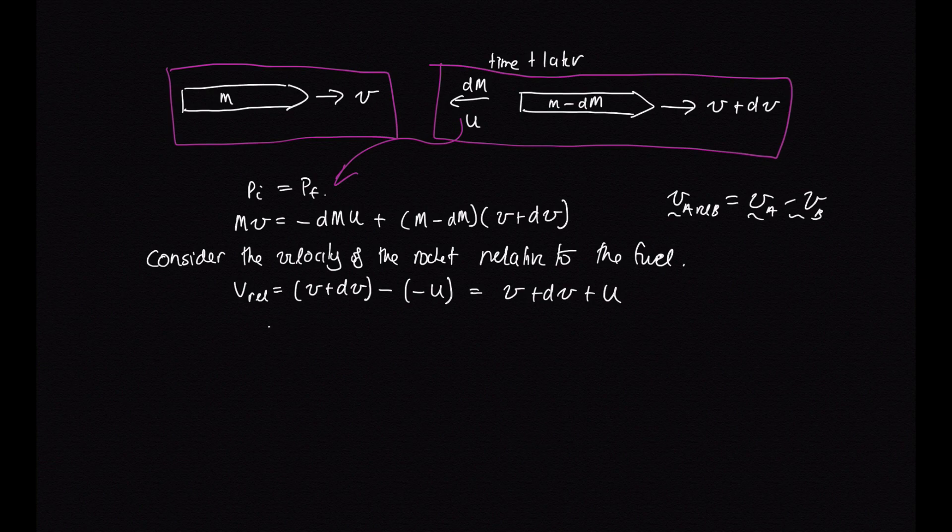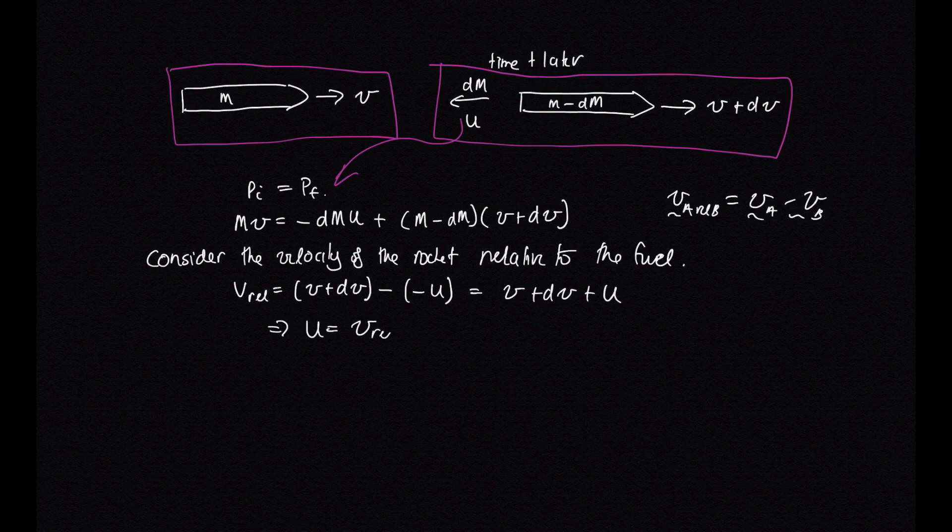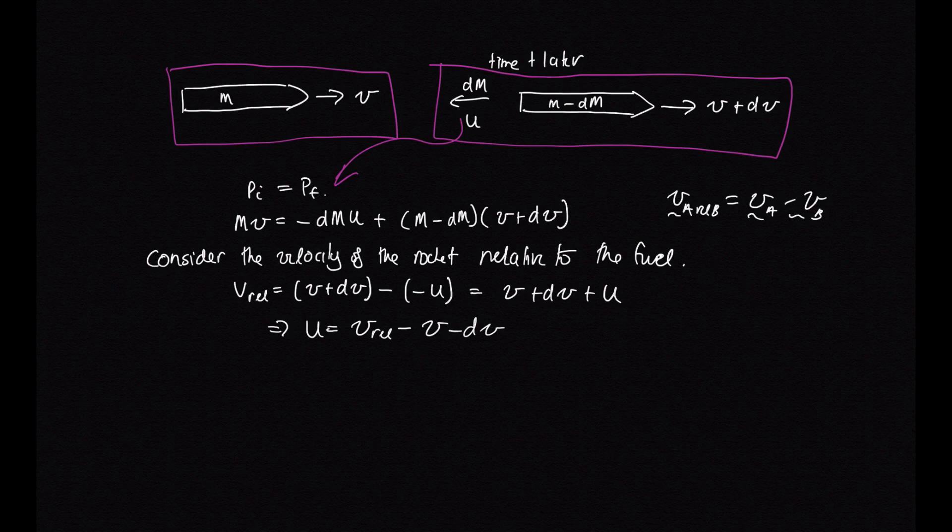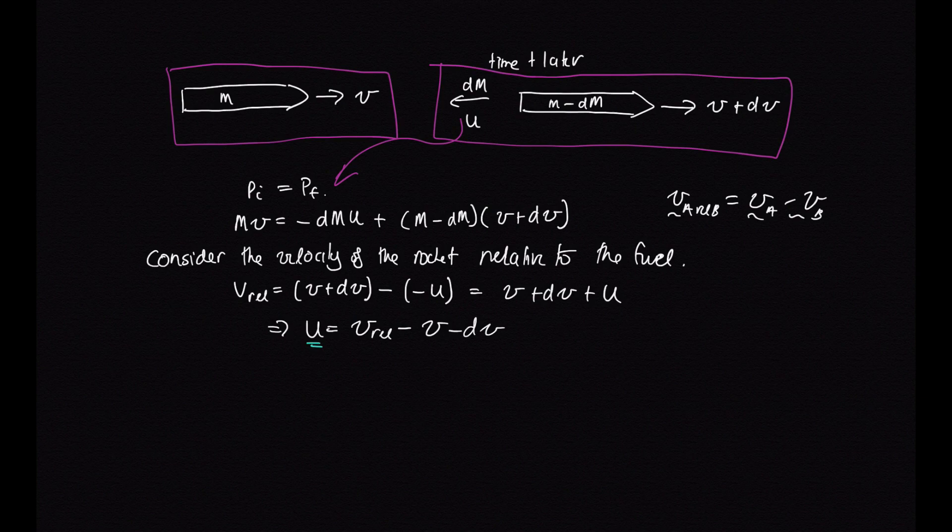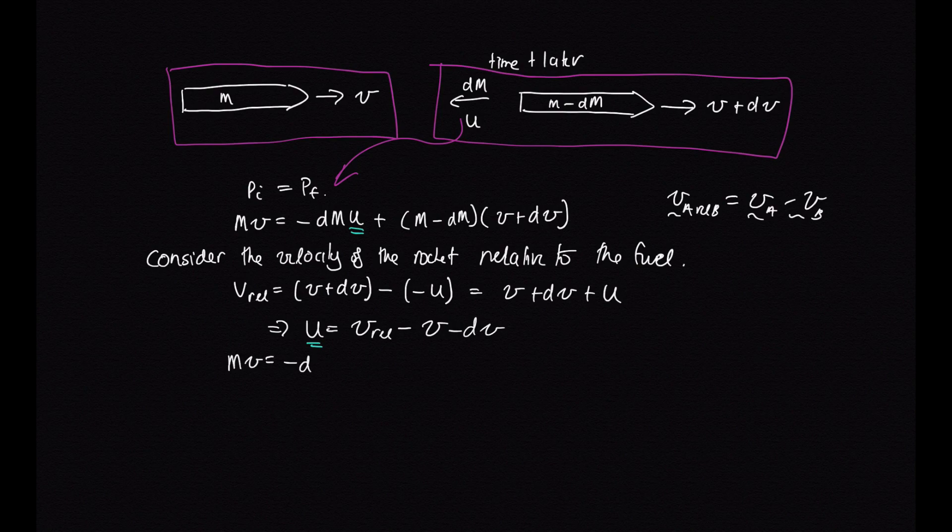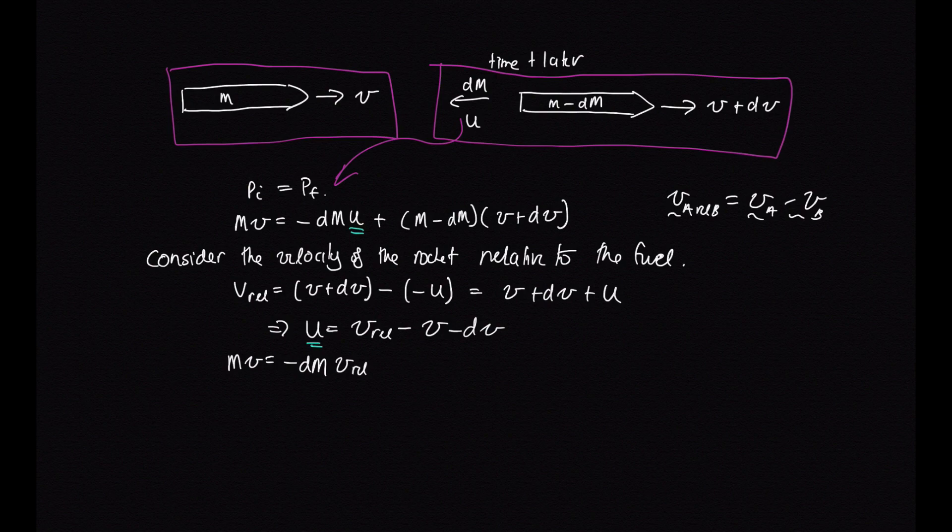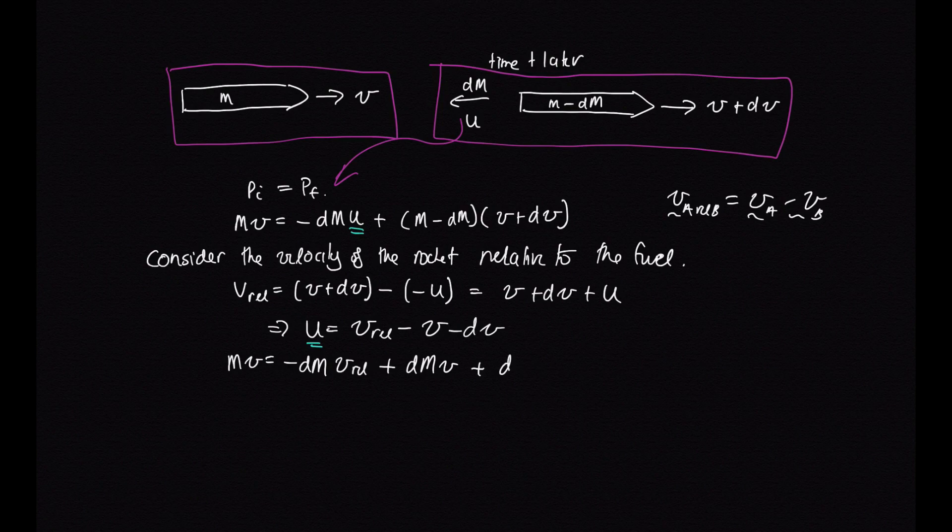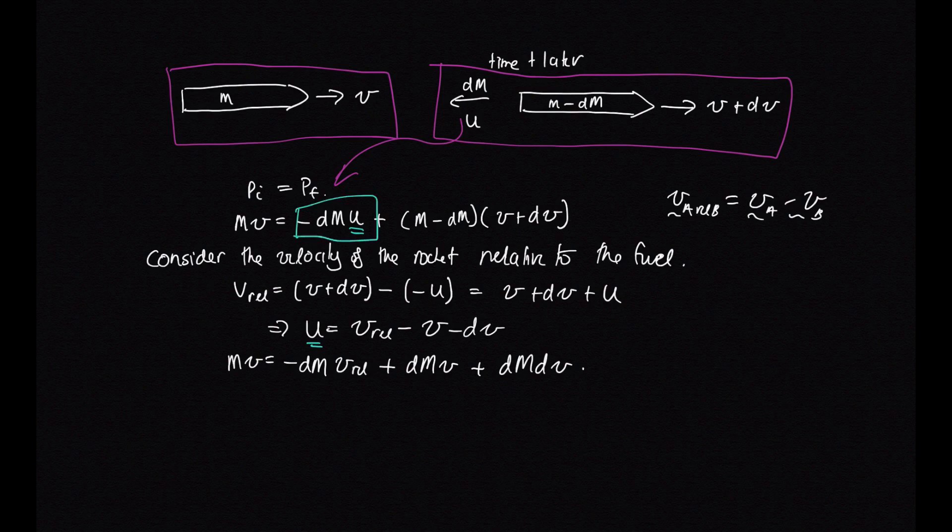So we'll just rearrange this and we'll say, well, the velocity of the fuel is equal to the velocity of the rocket relative to the fuel minus v minus dv. And now that we've rearranged that, we're going to substitute this back up into this expression here. So we have mv is equal to minus dm times v_rel.